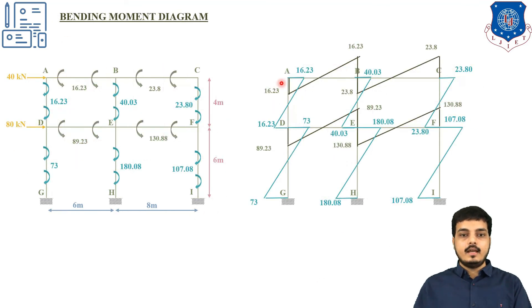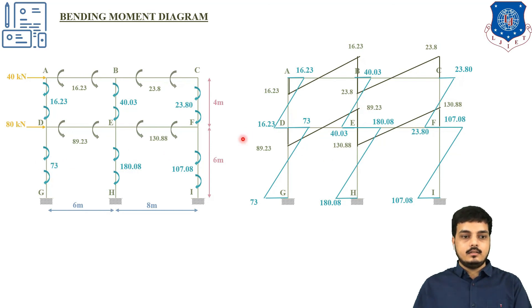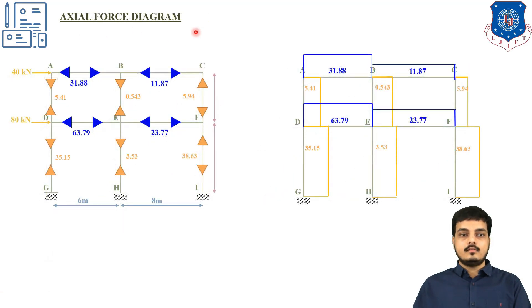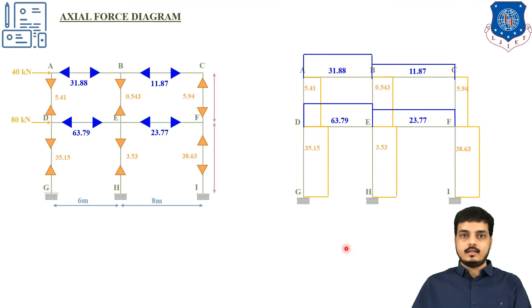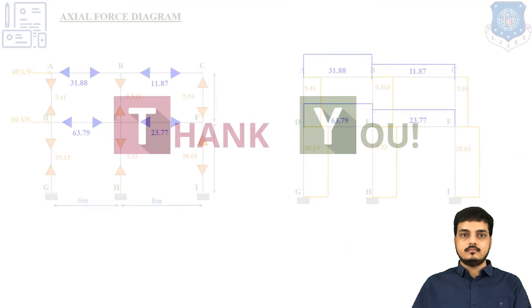The bending moment diagram is drawn with both directions considered — one up, one down — for beams and columns respectively. The beam moments and column moments are drawn accordingly. Finally, the axial force diagram is drawn using all the computed forces from the previous steps.